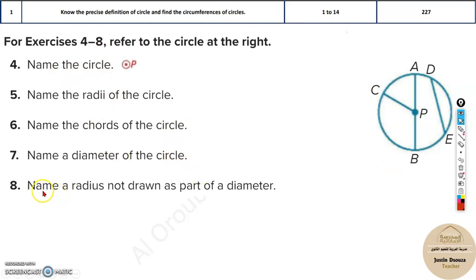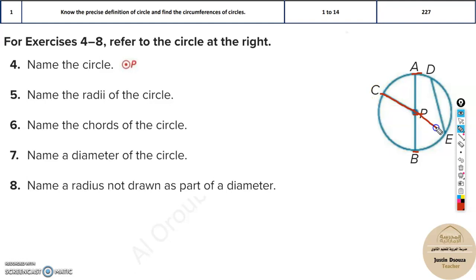Let's just look at the last one: name a radius not drawn as a part of a diameter. What it means is — look at this. This is a diameter, so there are two radii. So which radius is not a part of the diameter? For example, PC — this is not extended as a diameter. So that is the answer: line PC.